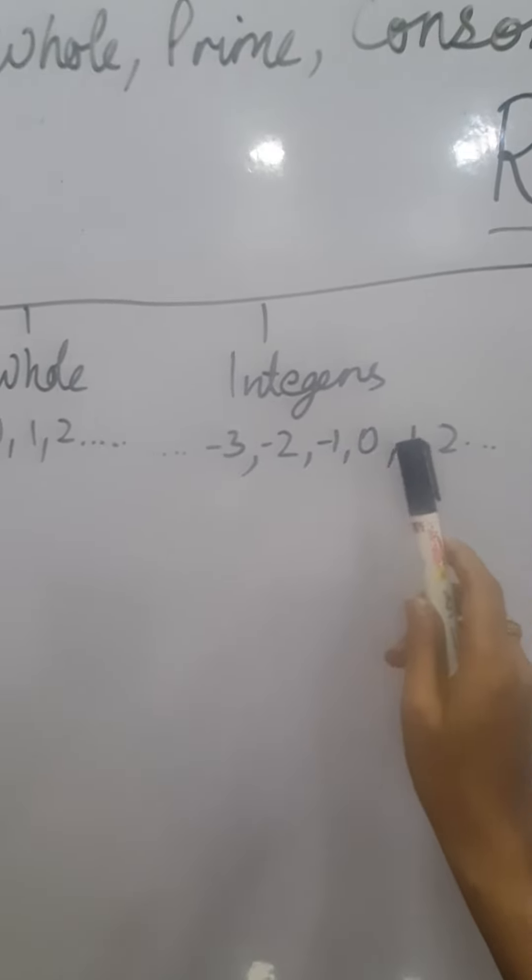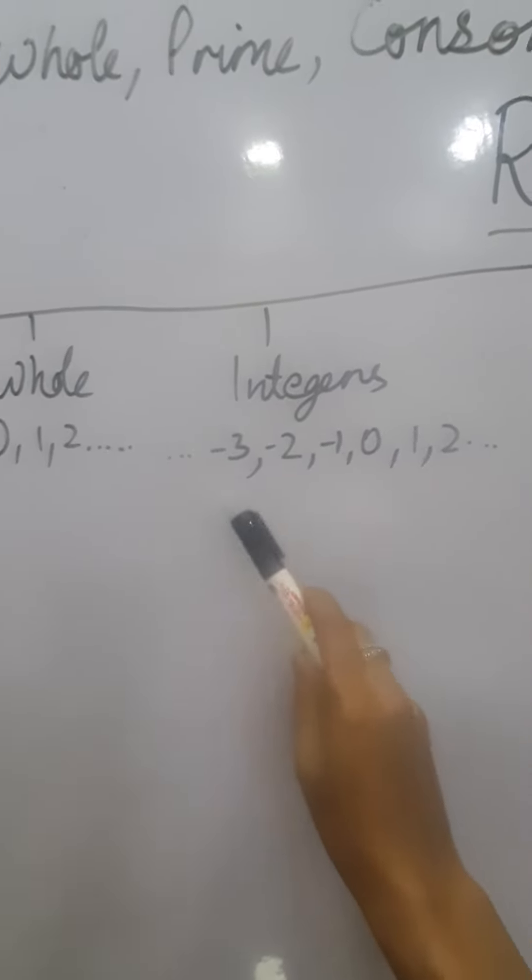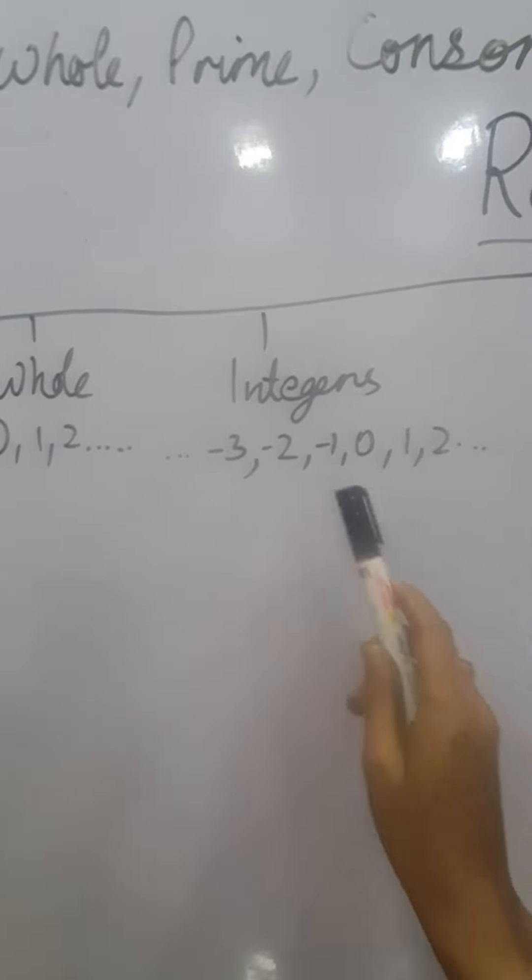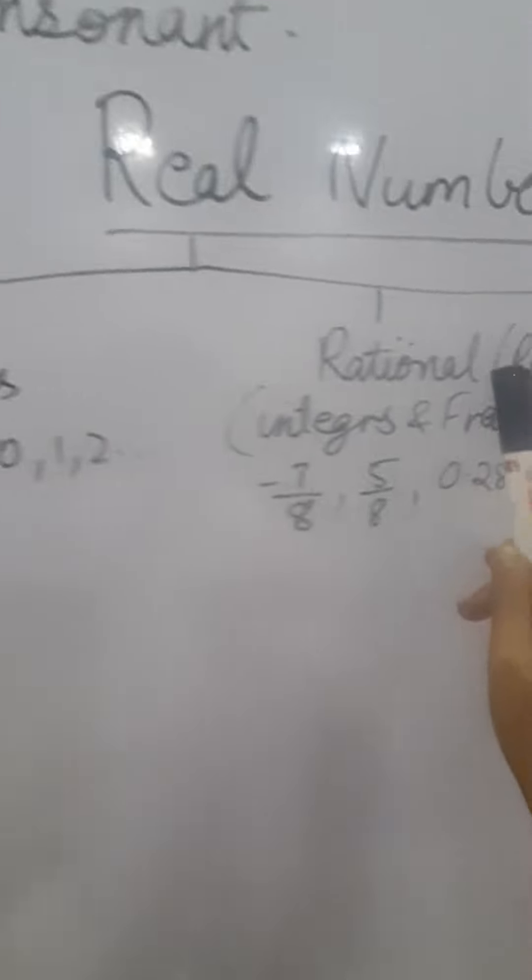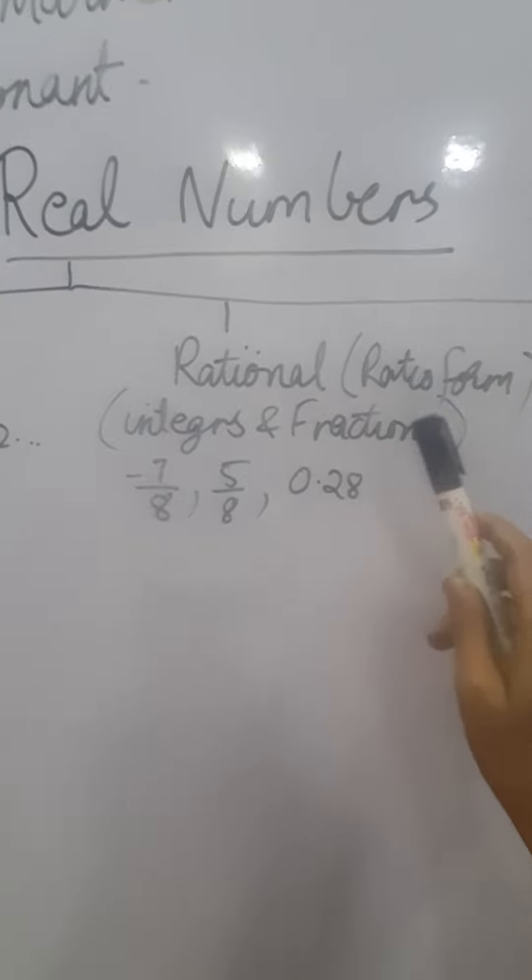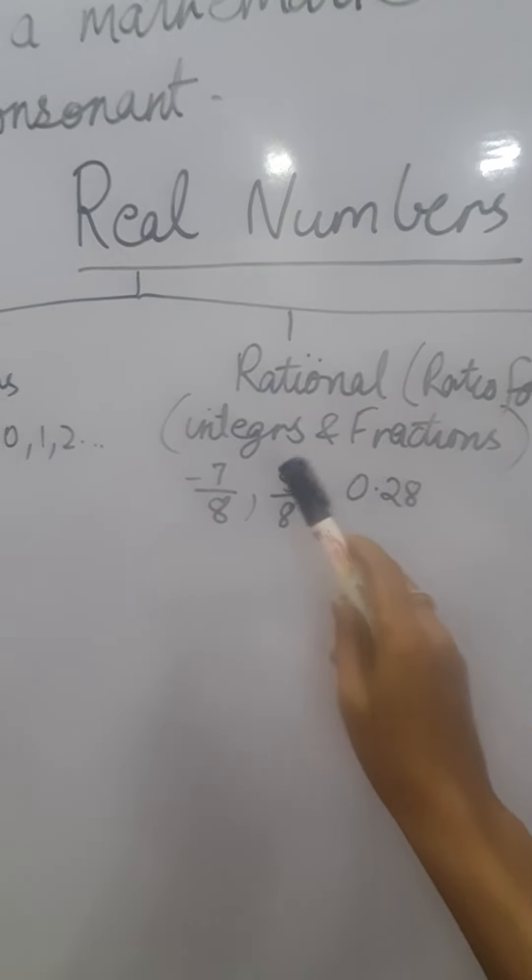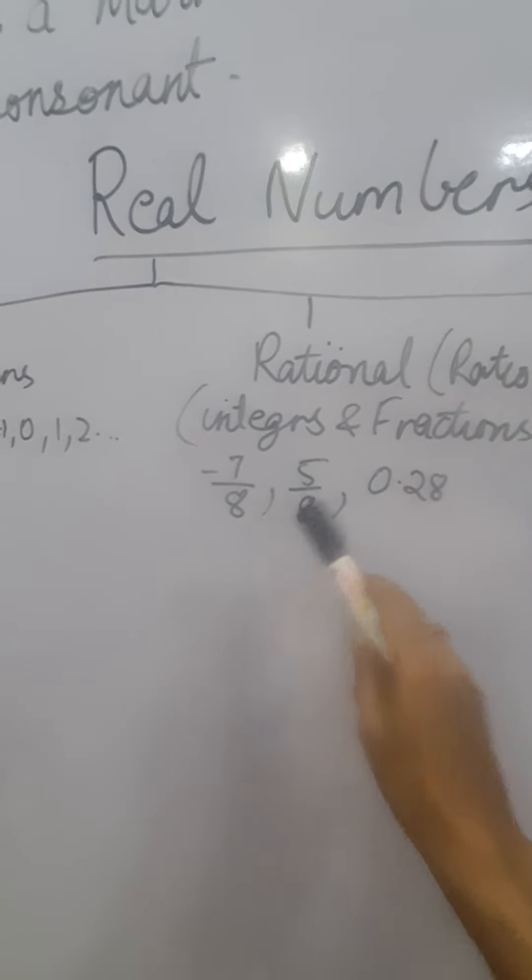integers which counts the numbers on the opposite side of 0, that is the negative numbers; rational numbers which are always in the ratio form, integers and fractions. You can see the examples.